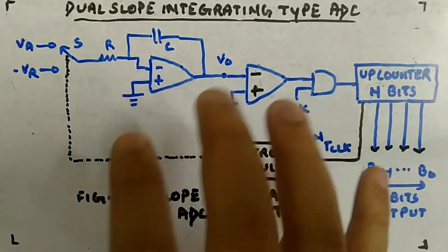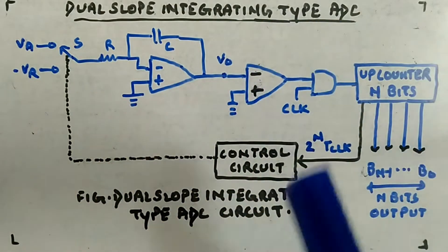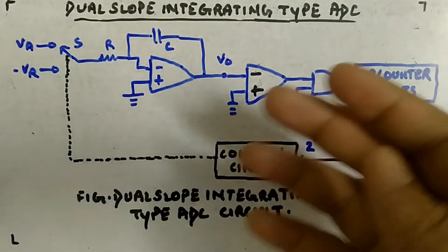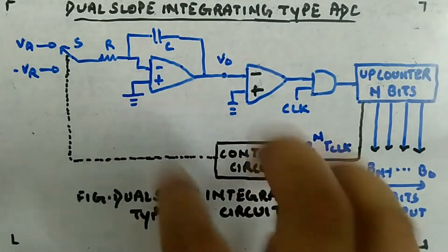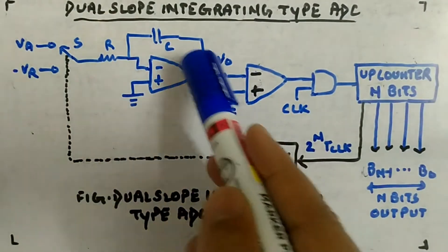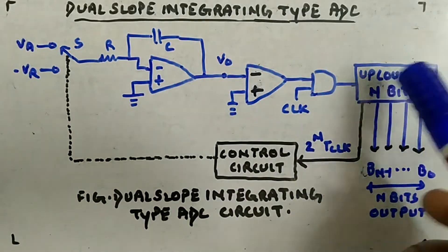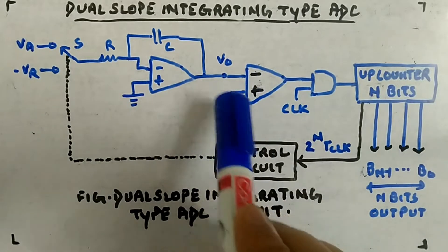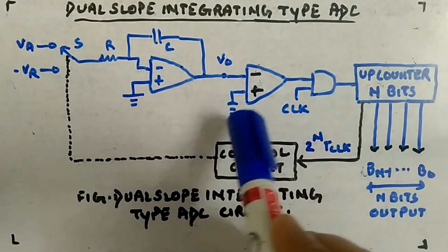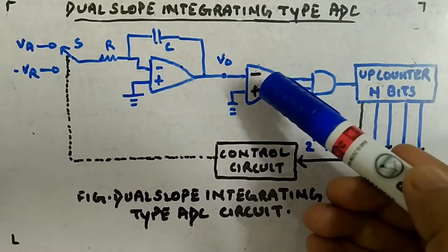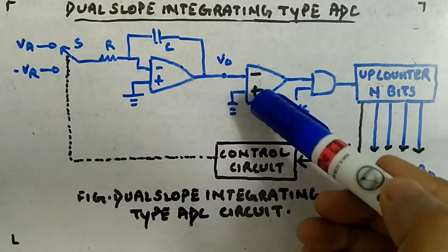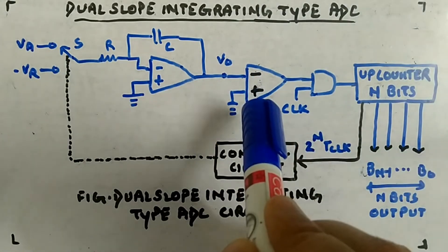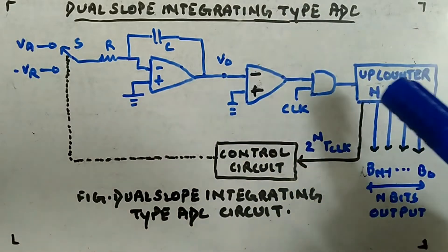I am giving you a full circuit of dual slope integrating type ADC. Here I have written dual slope integrating type ADC circuit. So whatever we have studied till now regarding dual slope integration, I am now combining everything. Here this is your integrator and this is your up counter. This is a comparator — mind you, the negative terminal is connected to V0 and positive terminal is connected to ground.